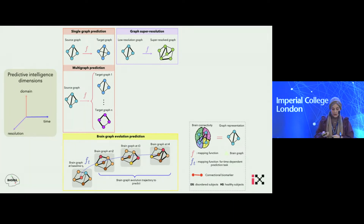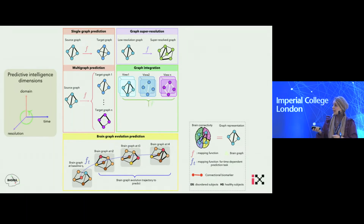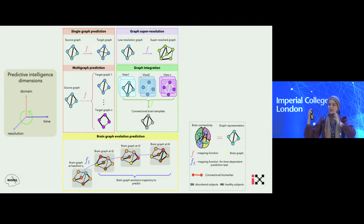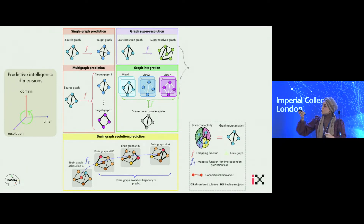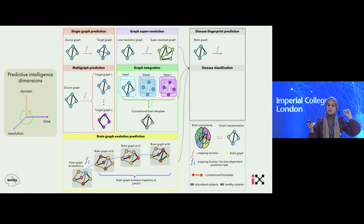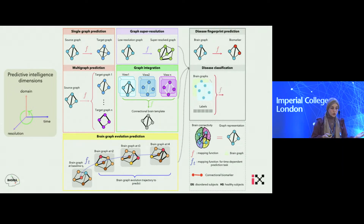We have also pioneered what we call the connectional brain template, where we use a deep neural network model to integrate a population of brain matrices into a single one that represents the fingerprint of a particular population at a particular stage — like age, sex, maybe happiness or depression. Using all of these predicted data along with the original, we are able to boost the performance of classifiers, biomarker identification, and distinguishing between disordered brains and typical brains.